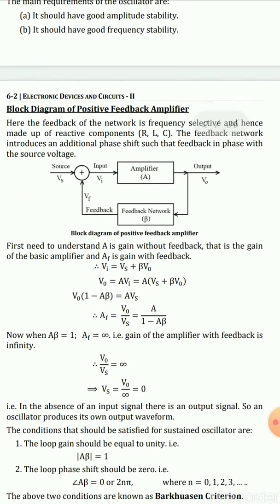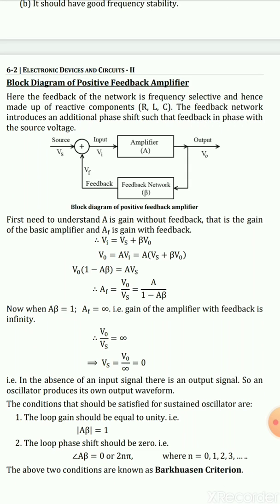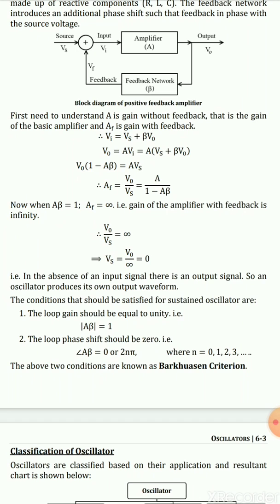From the derivation of the feedback amplifier, we arrive at the sustained oscillation conditions. The feedback voltage VF equals Vo times β. The output Vo equals gain A times the input Vi. Substituting these equations, we get the closed-loop gain AF equals A divided by (1 − Aβ). Now, if Aβ equals 1, the denominator becomes zero, meaning our gain is infinite.